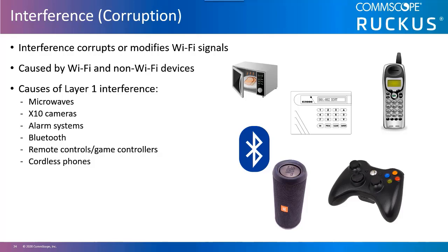802.11 devices will detect this, but not as a transmission from another device which they are trying to communicate with or contend with for the medium. Therefore, they will attempt to transmit, and their transmissions will most likely collide with the noise. This causes the intended receiver to never receive the signal, which will not send back an acknowledgement to the transmitter. Without receiving an acknowledgement, the original sender will wait until an acknowledgement timeout threshold expires, then try to gain access to the medium again by contending and retransmitting the signal. Some clients will try up to 32 times. A high retransmission rate is an indication of physical layer interference within your wireless network.